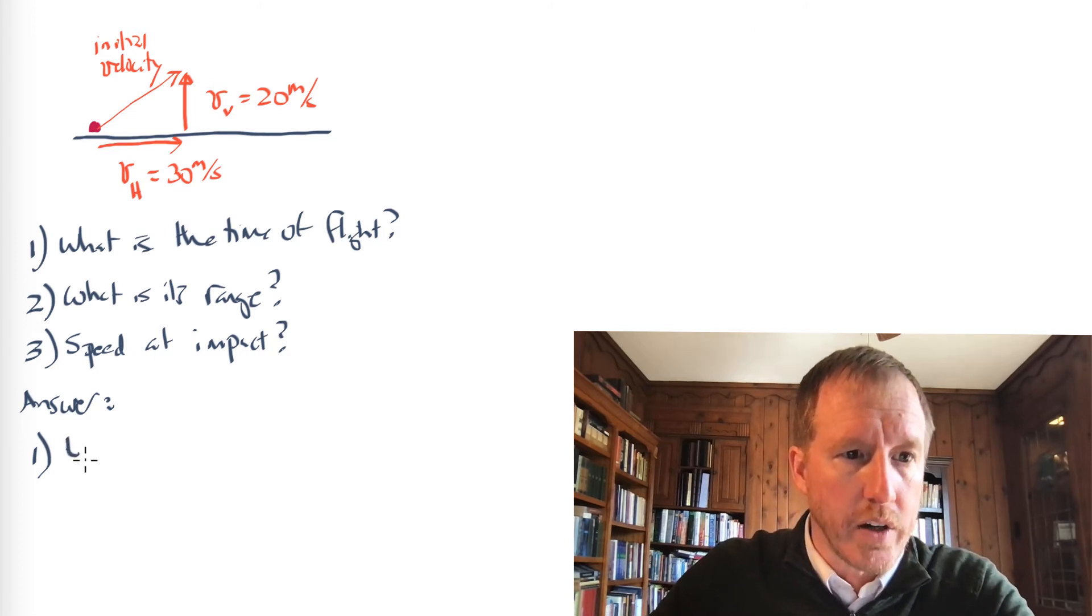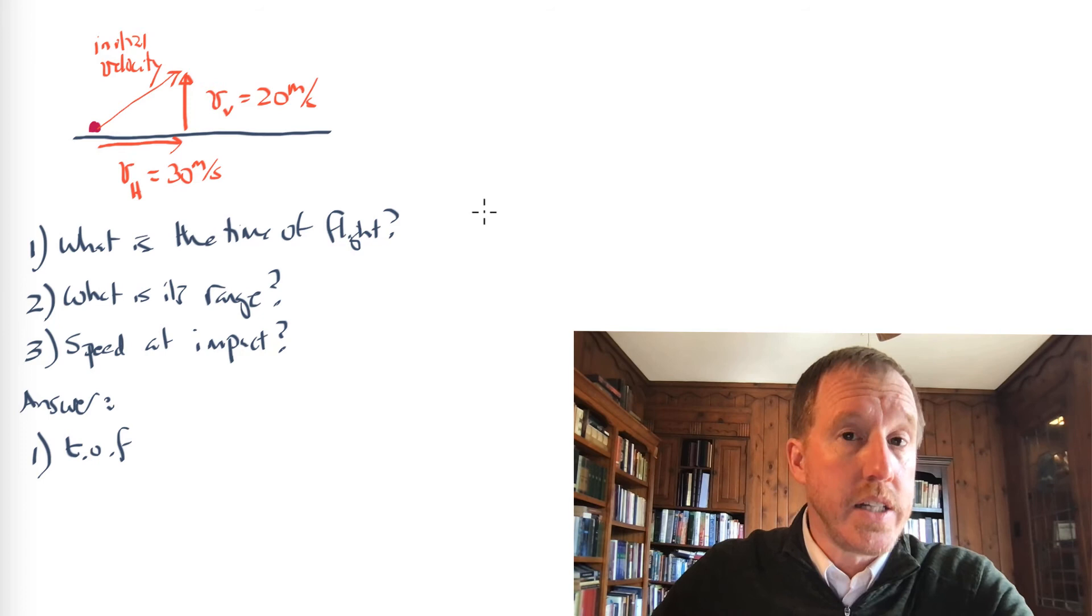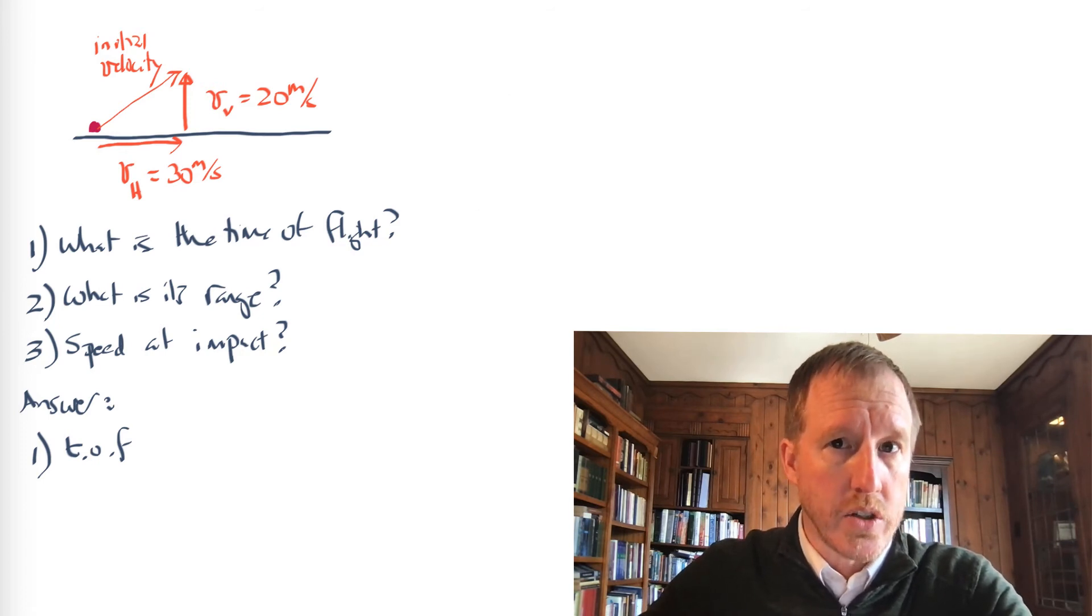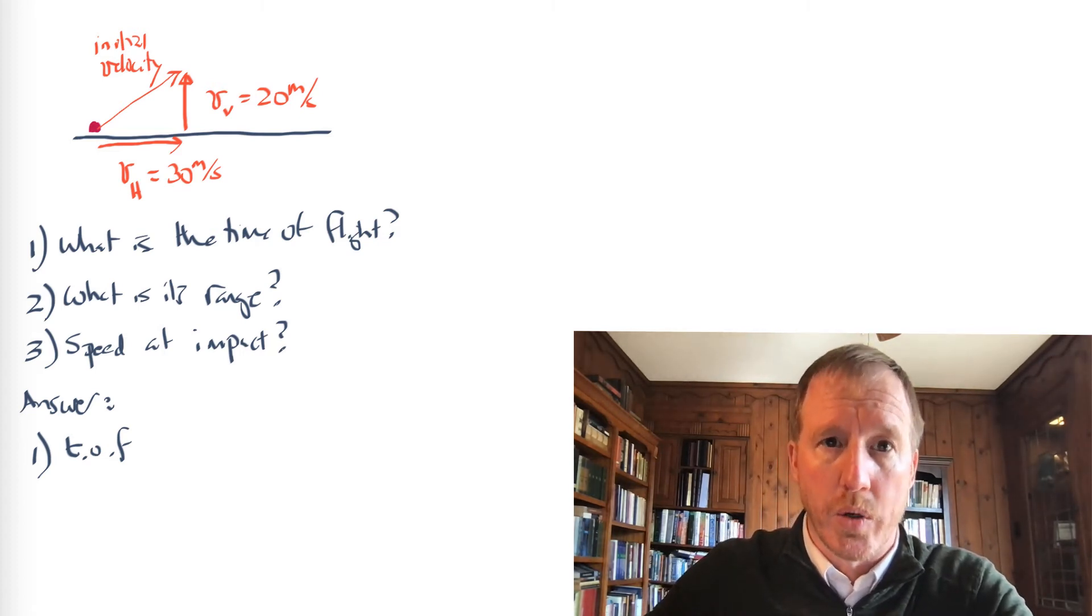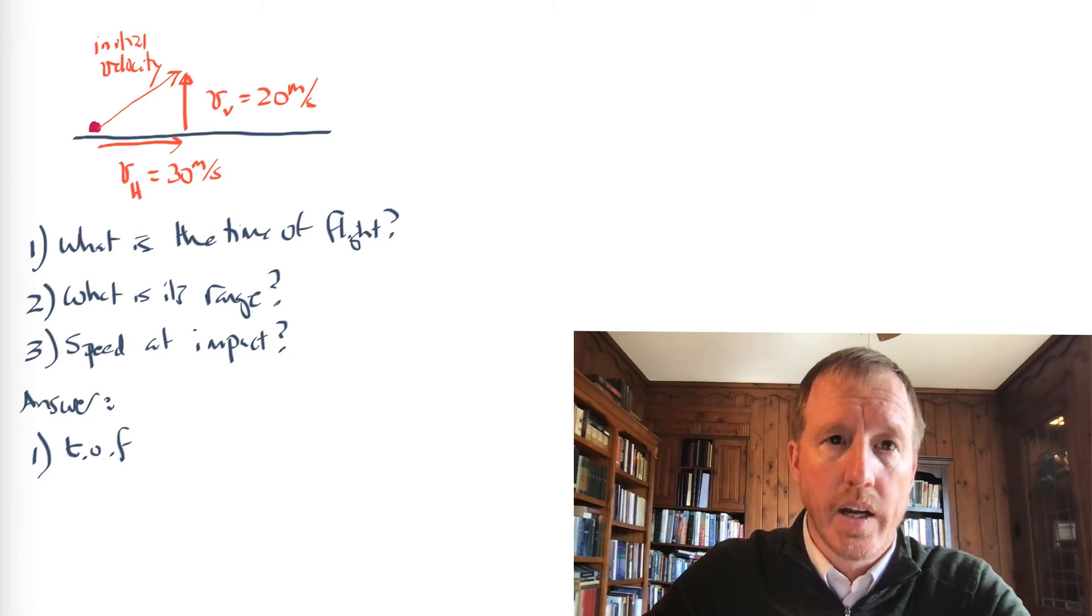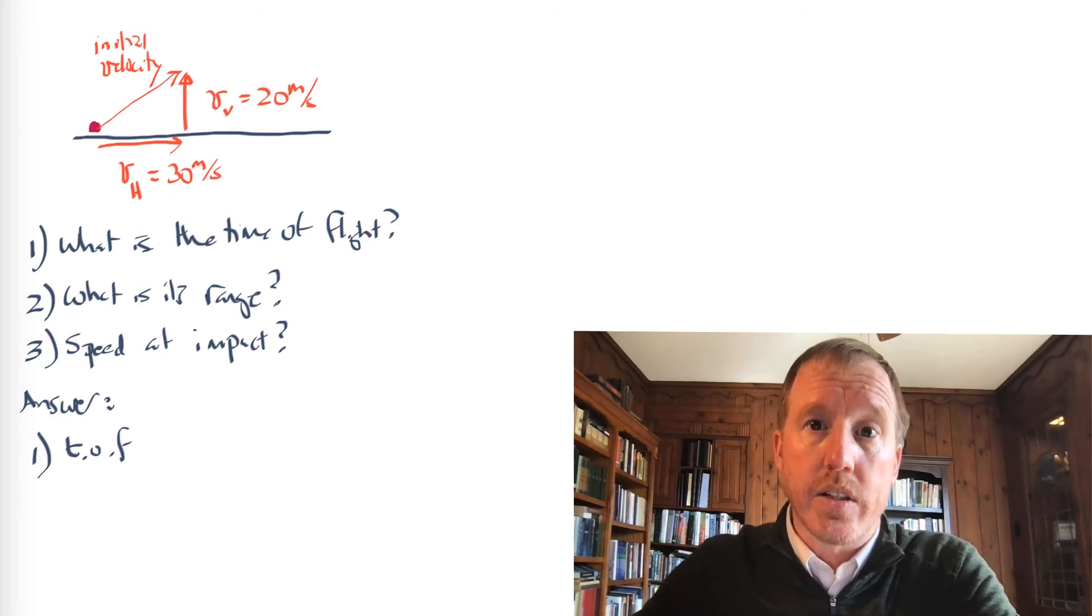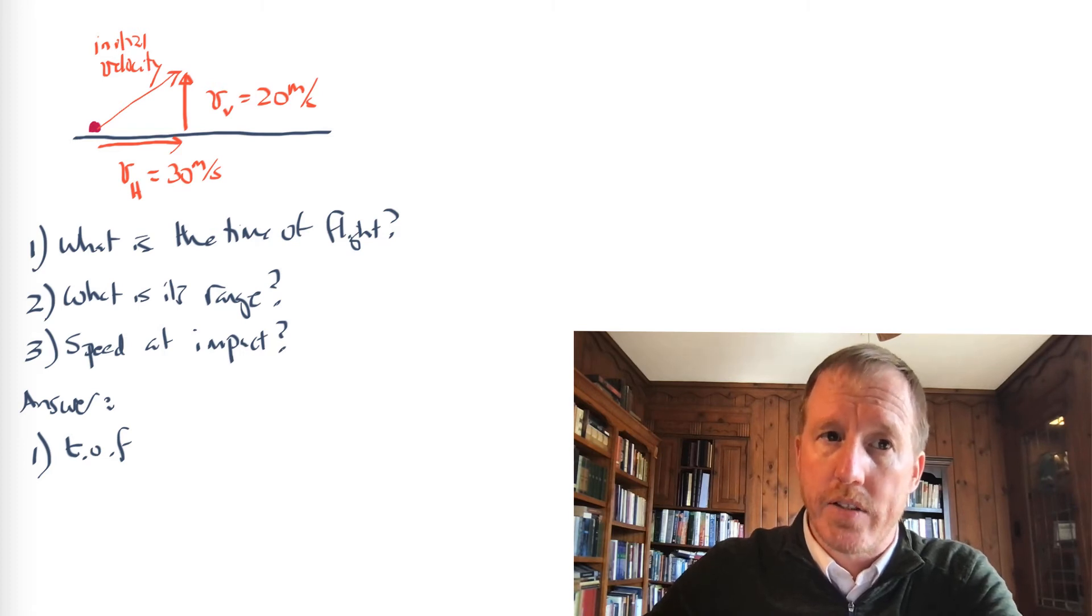So first of all, the time of flight, I'll write T-O-F, the time of flight. How do we determine this? Well, the idea is that only the vertical component of the speed determines how long it's in the air. The fact that it's moving horizontally in no way affects its vertical motion. So one can consider this in the same way that one would consider a ball that is tossed upward, straight upward, with a speed of 20 meters per second. Now, how would one consider a situation like that? Well, if it's tossed up at a speed of 20 meters per second, and the acceleration of gravity is downward at 10 meters per second per second, one can figure out how many seconds it takes to get to the peak of its flight, and then how many seconds it takes to get back down to the ground.